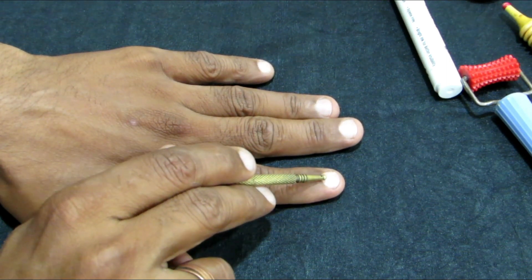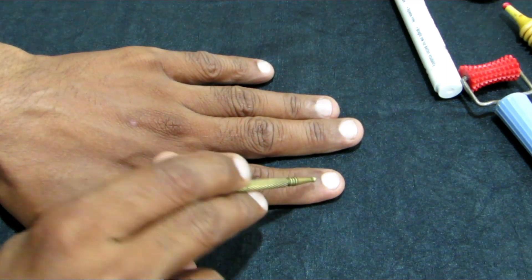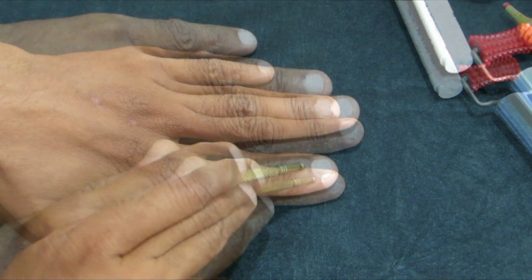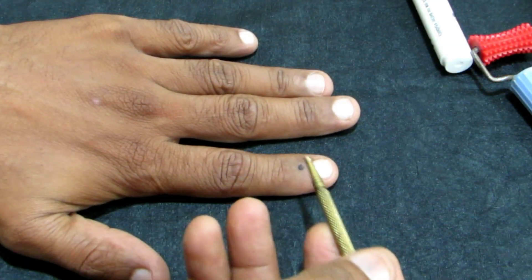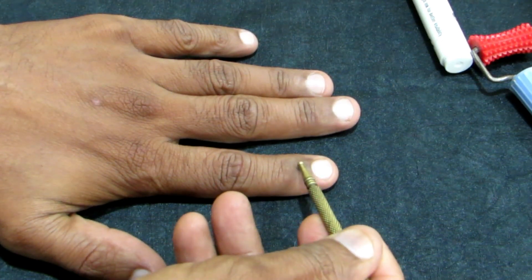As you can see, just below the nail, this is the point. This is a magical point, Triple Warmer 2. You have to press this.